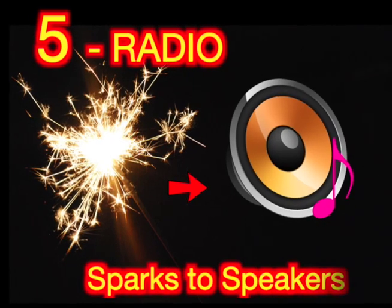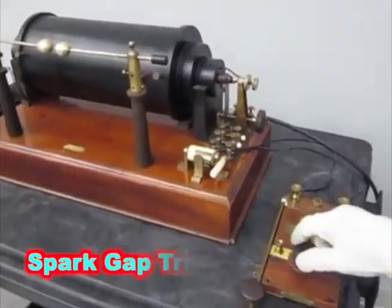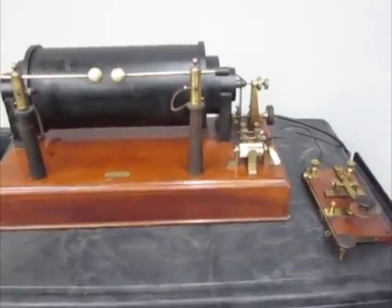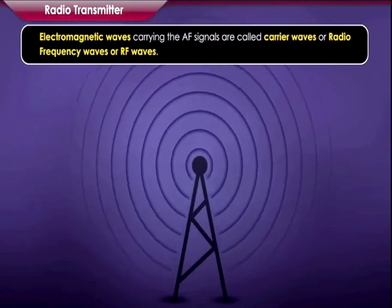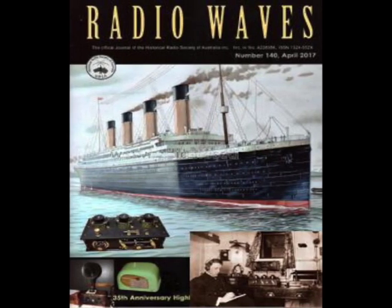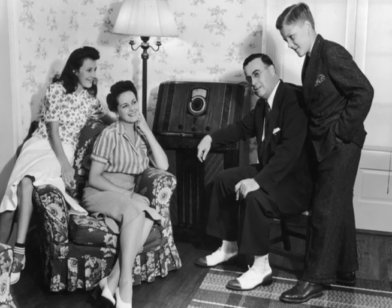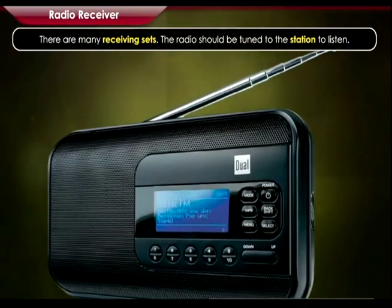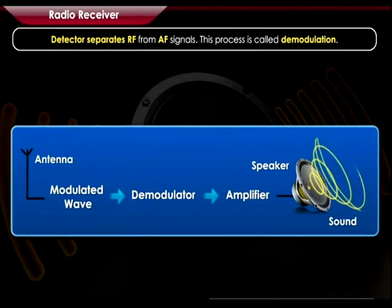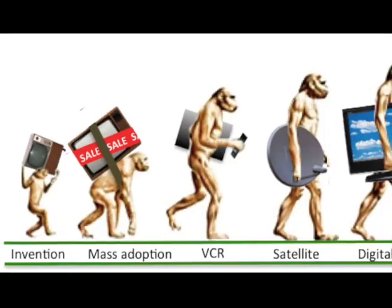5. Radio — sparks to speakers. When AC electricity jumps the gap, radio waves are discovered. Radio stations send out radio waves, like from ships to shore. Many people have radios at home. Inside the radio receiver, the waves come in and sound comes out to speakers. Remember, this is a time before TVs are invented.